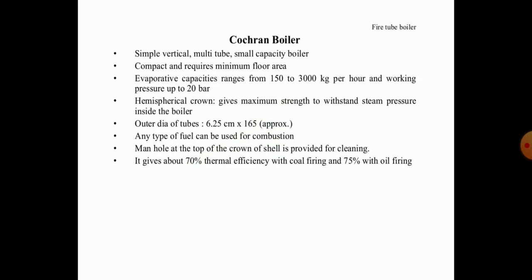The outer diameter of the tubes must be approximately 6.25 centimeters. Any type of fuel can be used for combustion, and a manhole at the top of the crown of the shell is provided for cleaning. It gives about 70 percent thermal efficiency with coal firing.